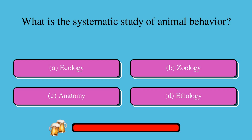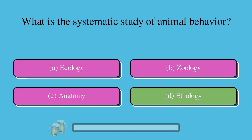What is the systematic study of animal behavior? A. Ecology, B. Zoology, C. Anatomy, or D. Ethology. The correct answer is D. Ethology.